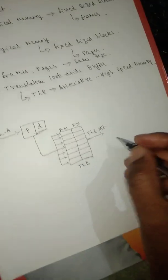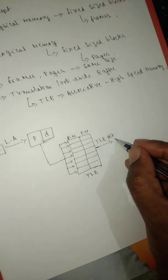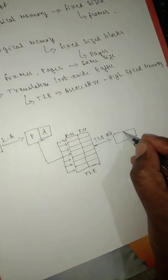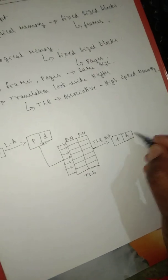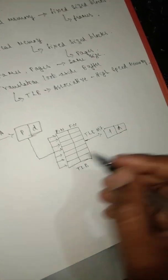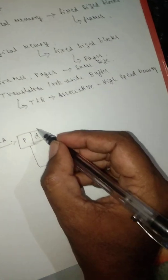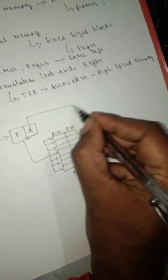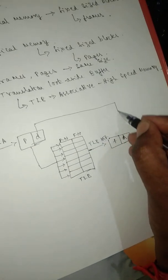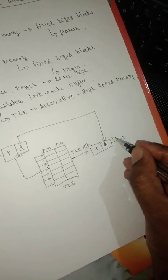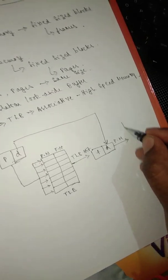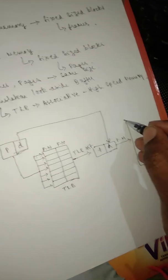If there is a TLB hit, you access the corresponding frame and combine it with the offset D or displacement. You take this displacement and use it to access the physical memory.